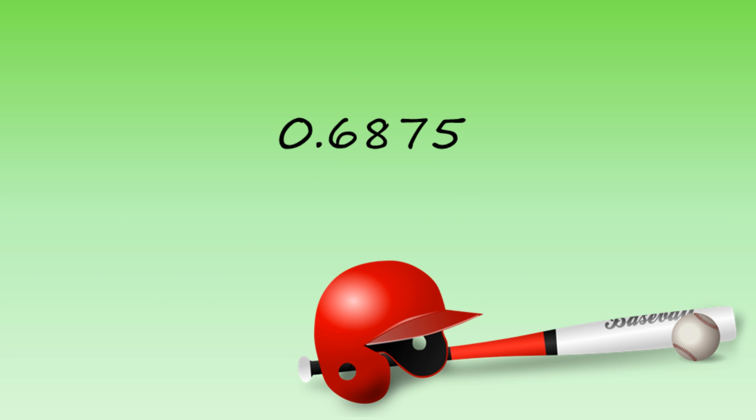Baseball averages are always given to three decimal places, and we have four, so we have to round it off. The way you do this is you look at the fourth decimal. If it's four or under, then the third decimal stays at seven. But if it's five or over, the third decimal gets rounded up to eight. In this case, because it's five, we round up, leaving us with 0.688.